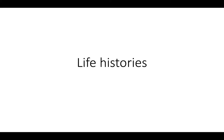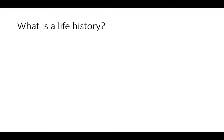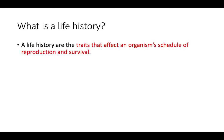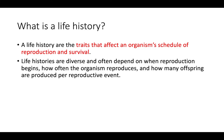This video is going to be about life histories. A life history is the traits that affect an organism's schedule of reproduction and the ability of that organism to survive. Life histories are really diverse and depend on when reproduction begins, what age that process begins at, how often that organism can reproduce, and how many offspring that organism typically has per reproductive cycle.